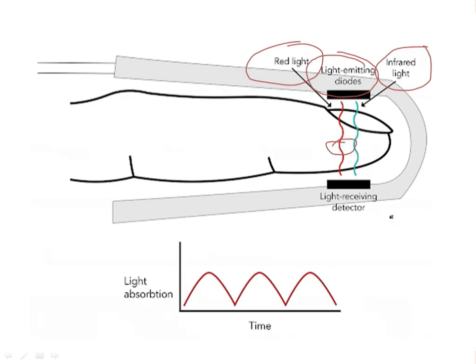So the red light from the light emitting diode to the light receiving detector, or photodetector, will be associated with detecting deoxygenated hemoglobin. By the same way, the infrared light, with wavelength 940 nanometers, will be absorbed by the oxygenated hemoglobin.